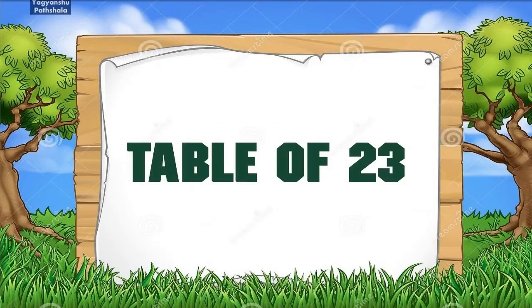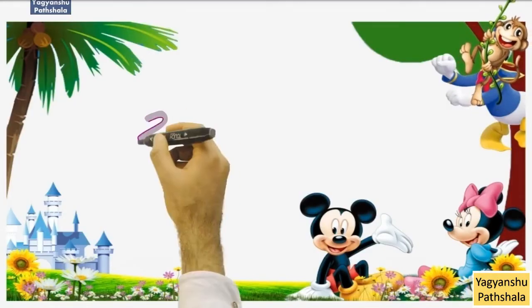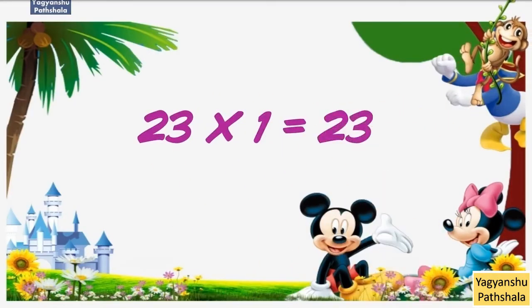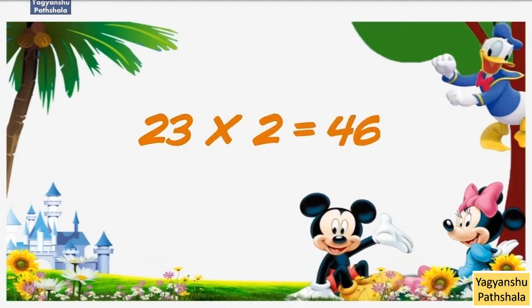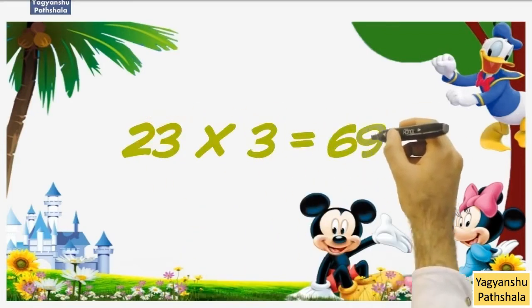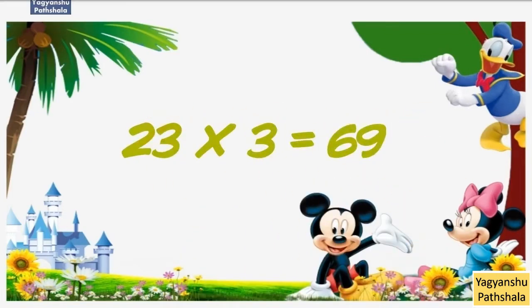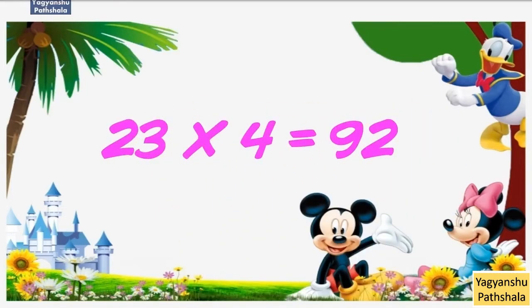Table of 23. 23 1 Jaa 23. 23 2 Jaa 46. 23 3 Jaa 69. 23 4 Jaa 92.